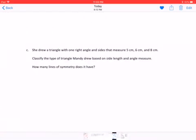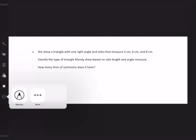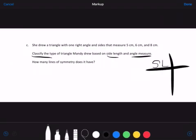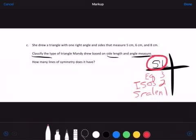C says she drew a triangle with one right angle and sides that measure five centimeters, six centimeters, and eight centimeters. Classify the type of angle Mandy drew based on side length and angle measure. All right. So our side length choices would be equilateral when you have three equal sides of a triangle. Isosceles when you have two equal sides. And then scalene, when none of the sides are equal.